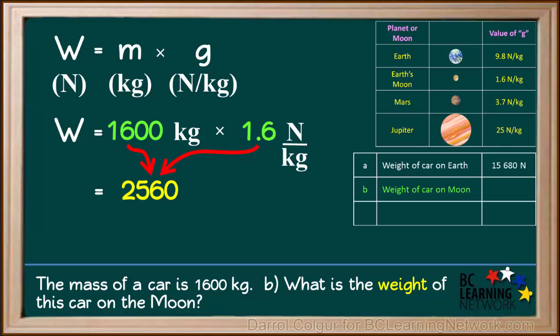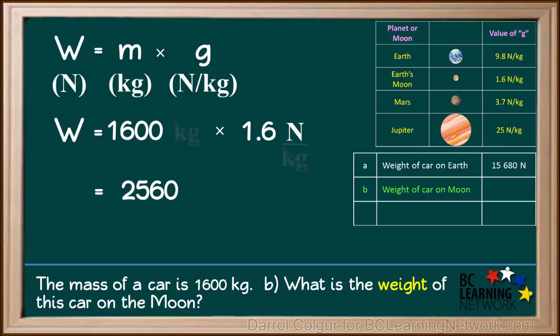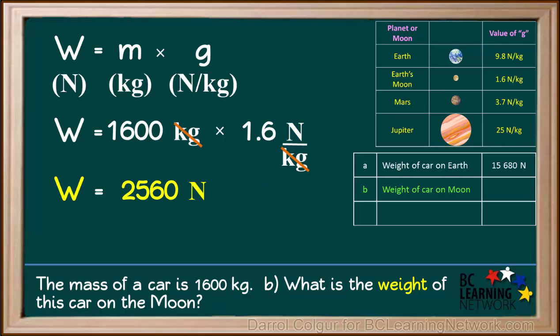1,600 times 1.6 comes out to 2,560. The unit kilogram is in the numerator and the denominator, so it can be cancelled out, leaving us with only newtons as a unit. The weight of the car on the Moon is 2,560 newtons.